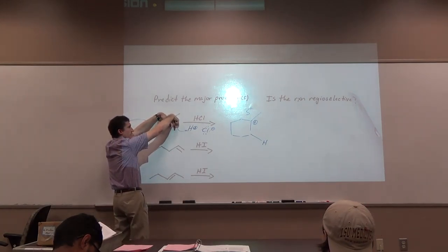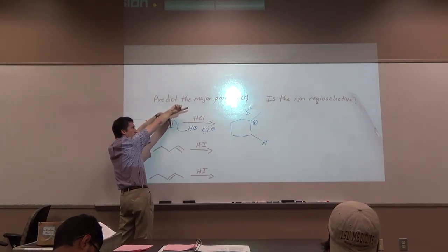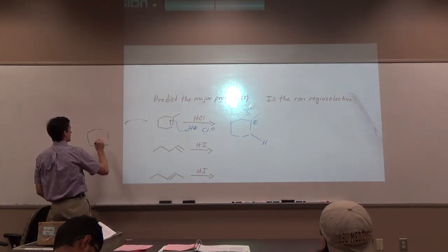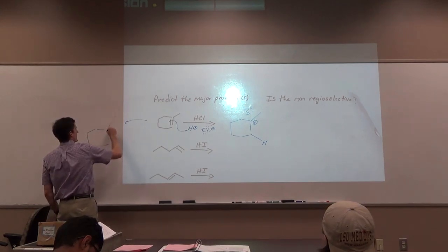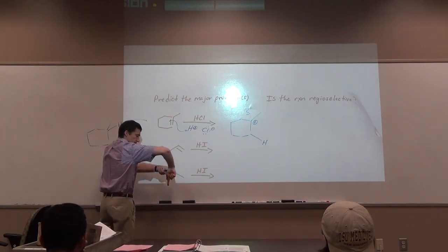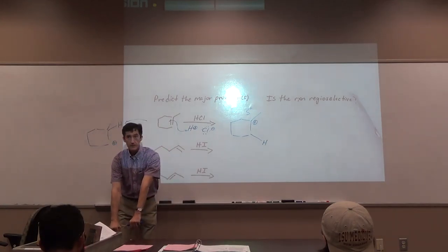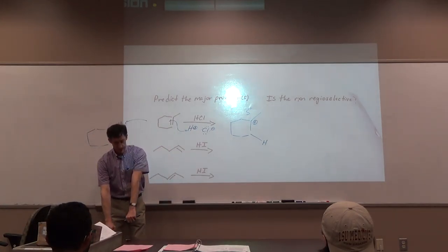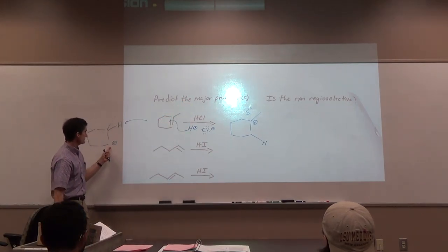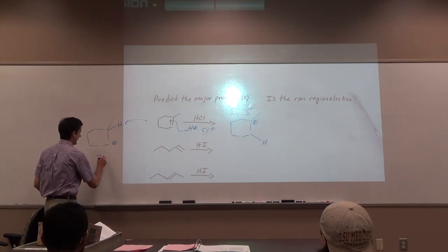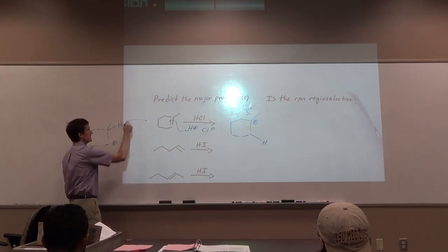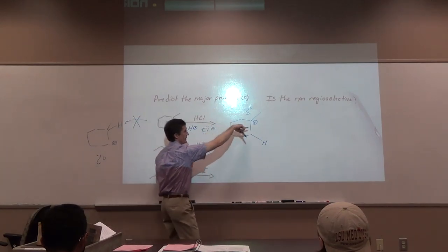If the pi bond broke away from the bottom carbon and attacked the H the other way, the H would end up on top and the plus charge would be on the bottom carbon. That's not as good — it's secondary. That's going to be a higher energy intermediate. Tertiary is the way it's going to go.